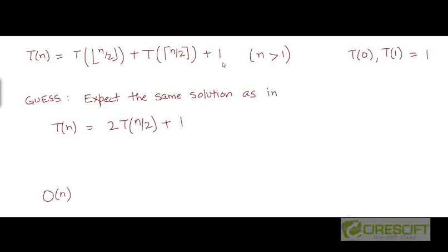So let's say this recurrence had been slightly different — the right-hand side was T(n/2) + T(n/2) + 1. We expect the solution to that modified recurrence to be asymptotically the same, because the presence or absence of floor and ceiling operators shouldn't affect the overall asymptotic complexity. Ignoring those operators gives us 2·T(n/2) + 1 on the right-hand side.